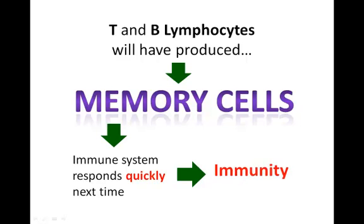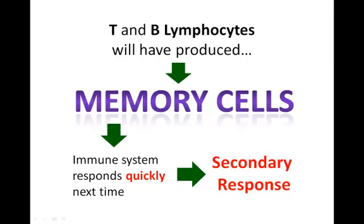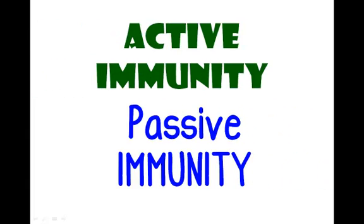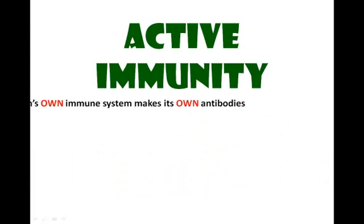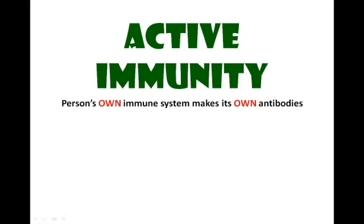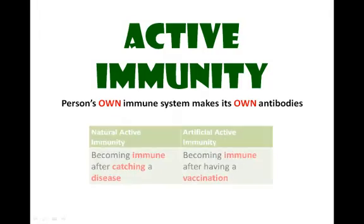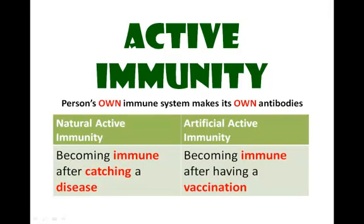And we'd call this the secondary response. Exactly — the secondary response often gets rid of the pathogen before the person experiences any symptoms of the disease. Immunity can be active or passive. Active immunity is where a person's own immune system makes its own antibodies after being stimulated by an antigen. A natural example is when you become immune after catching a disease.